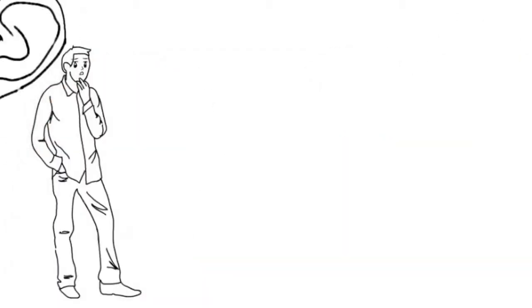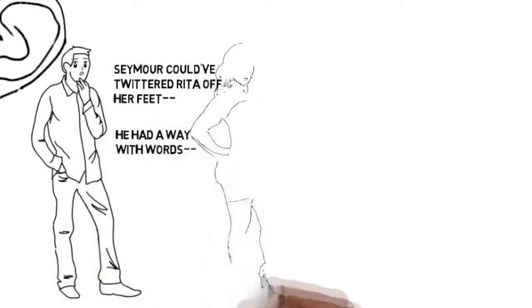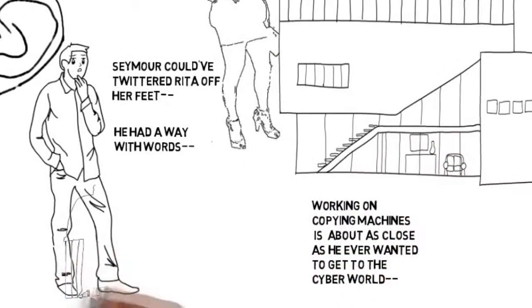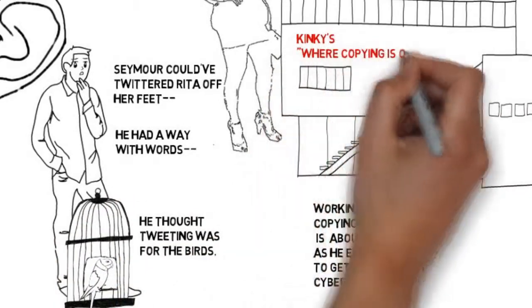Seymour could have twittered Rita off her feet. He did have a way with words, but that wasn't his way. Working on copying machines is about as close as he ever wanted to get to the cyber world. Besides, he thought tweeting was for the birds.